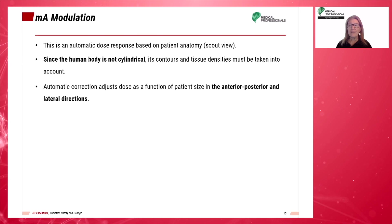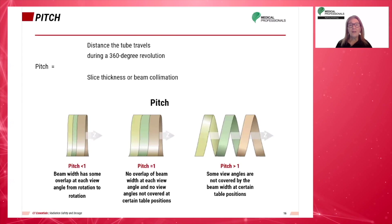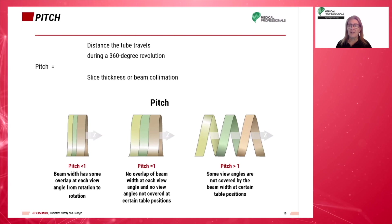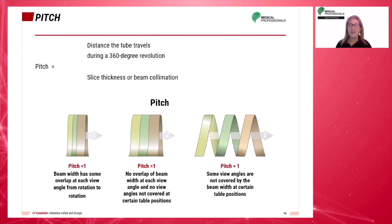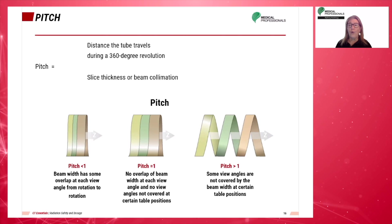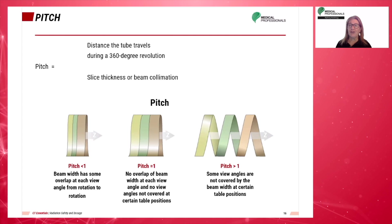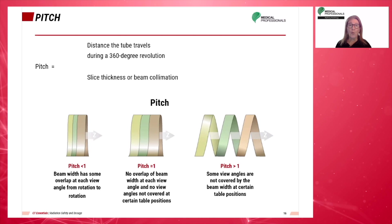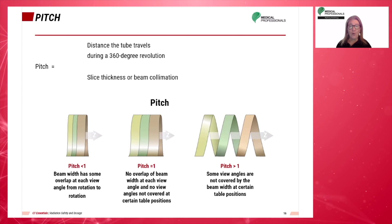Spiral or helical pitch is defined as the ratio of the distance the tube travels per rotation to the total collimated x-ray beam width. It can also be defined as an extension or contraction of the helix. Pitch has an inverse relationship to dose — if pitch increases by two, dose is reduced to one half. Pitch affects not only patient dose but image quality as well.